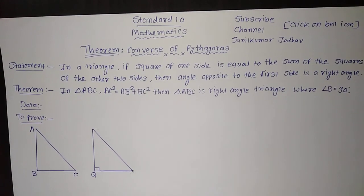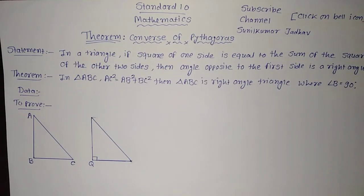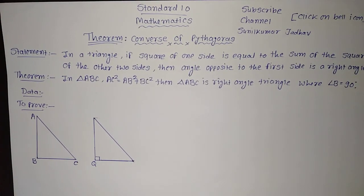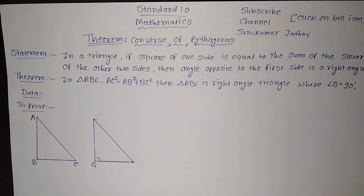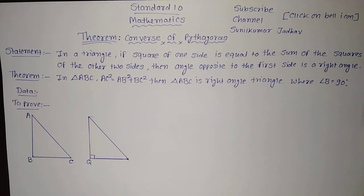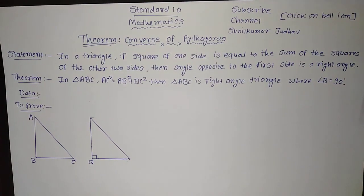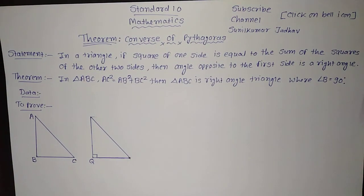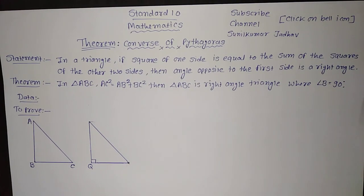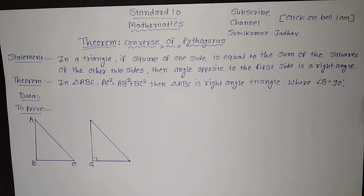While we are talking about converse statements — which you have already learned about in standard 9 geometry — if P then Q is a conditional statement, when we interchange the position of P and Q, the statement becomes a converse statement. So if P then Q, the converse of this statement will be: if Q then P.